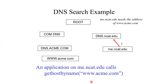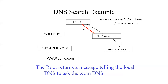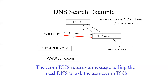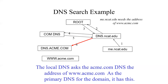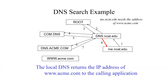Here's how a domain name server search works. Imagine you're at ANT at me.ncat.edu and want to find the IP address for www.acme.com. You send a request to the ANT domain name server. It may not know, so it sends the request to the root, asking where .com is. The root replies with the .com server location. You ask the .com server where acme.com is; it points you to the acme.com domain name server. That server sends you back the answer. It's a progressive recursive search going back through networks to find the address.